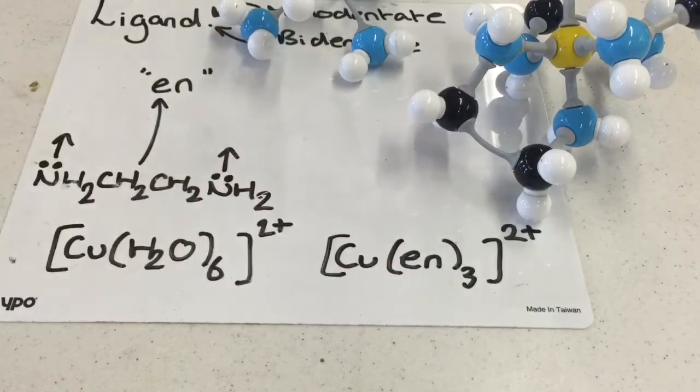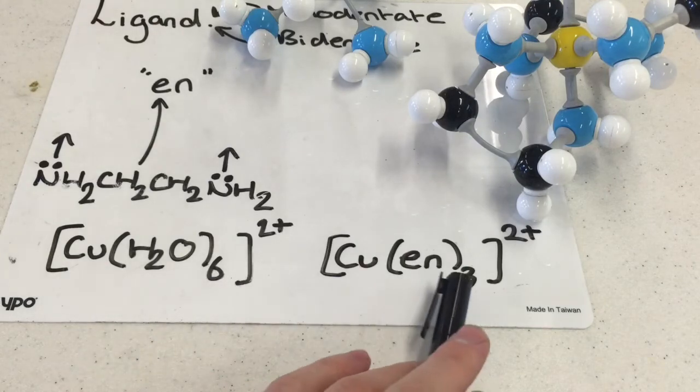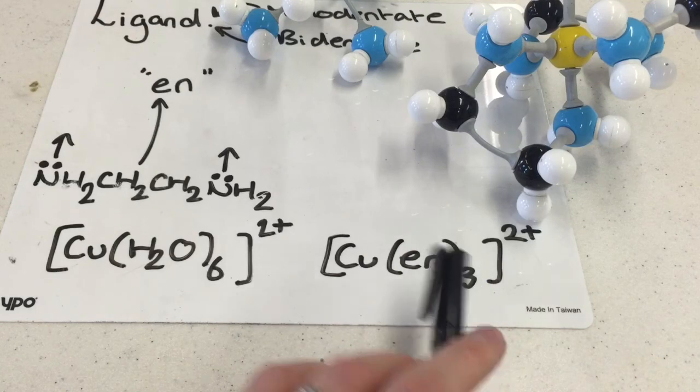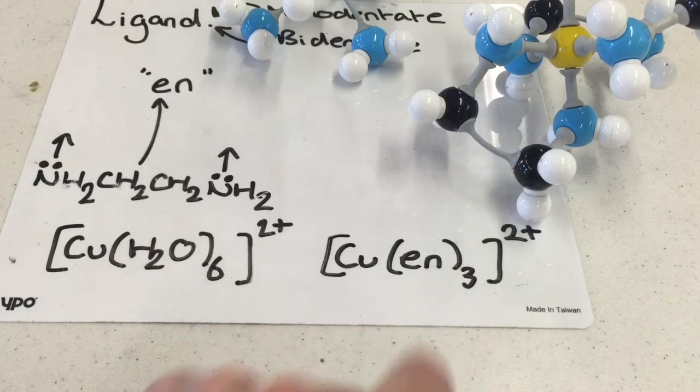These two structures, just to repeat, have the same coordination number, but they have a different written formula in terms of how many ligands are required, and this can be misleading. So lots of people see the three here and think that's the coordination number, but that's just not true. You have to make sure you think about what the structure looks like.